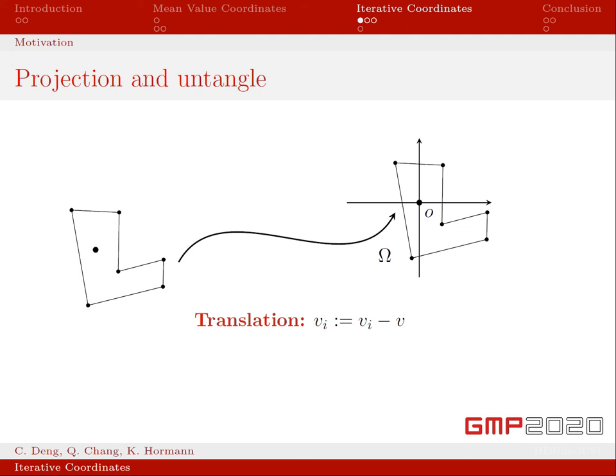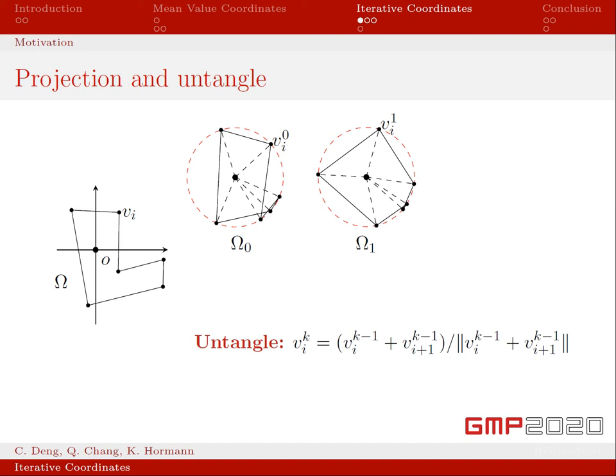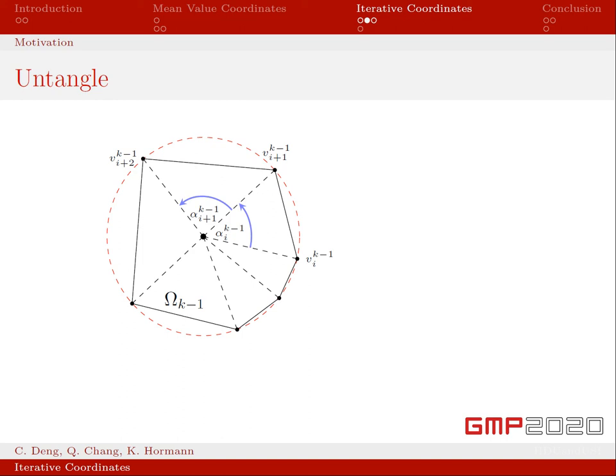Next, I will introduce how to construct the iterative coordinates. For any v inside the polygon, we first shift v to the origin. Remember that translations do not affect the GBCs. Then we project all vertices on the unit circle around the origin. This step has the effect of untangling the angles. We divide this angle equally and then project it on the unit circle to get a new vertex. In this way, we can get a new polygon like this.